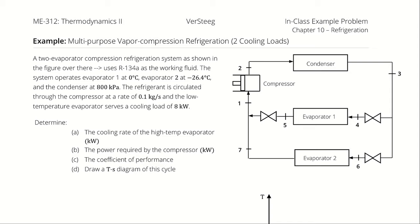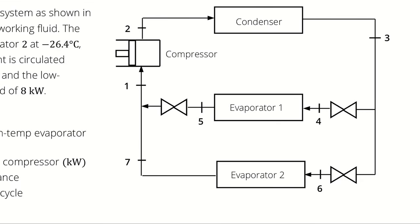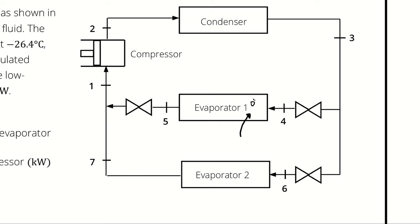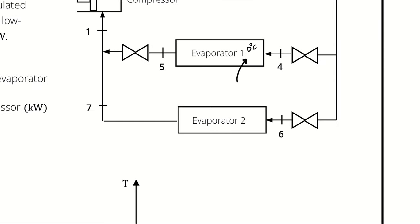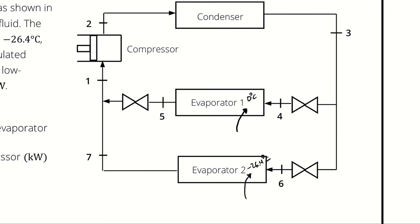We have a vapor compression refrigeration system that is pulling heat in from two different places maintained at two different temperatures. In one we are pulling heat in and maintaining an evaporator temperature at 0 degrees Celsius; in the other, negative 26.4 degrees Celsius. You can think of that like a refrigerator section and a freezer section of one big cooling unit maintaining two different temperatures for two different purposes. As a result of those two different evaporator temperatures, we are going to have two different evaporator pressures.